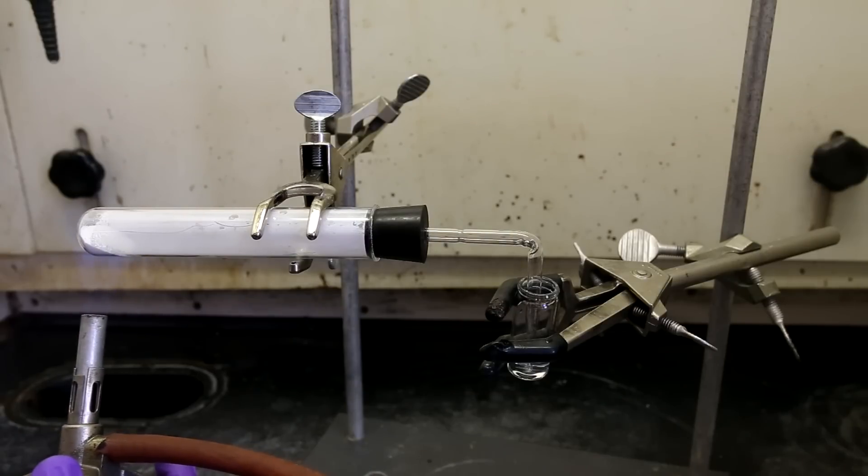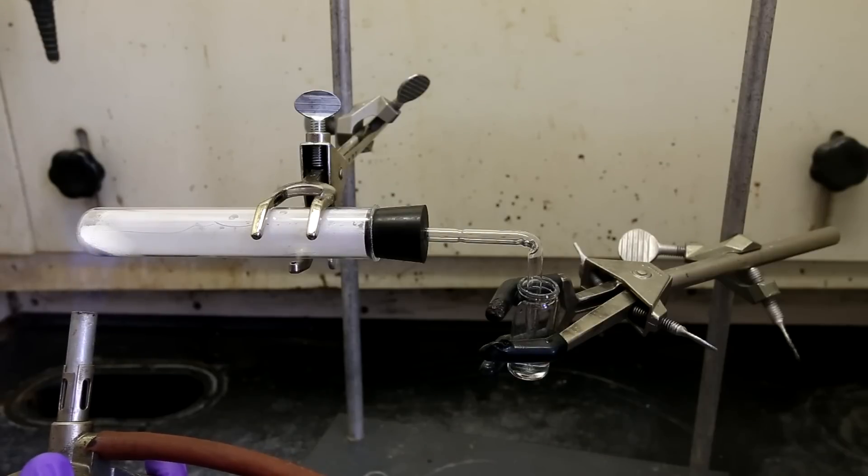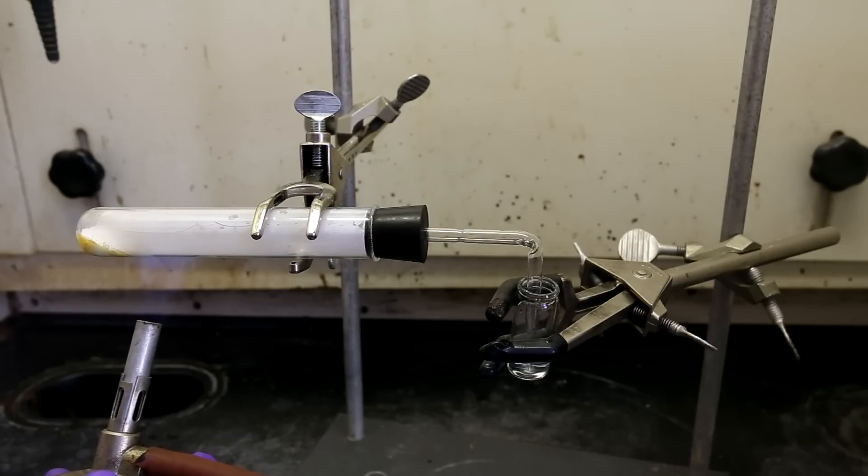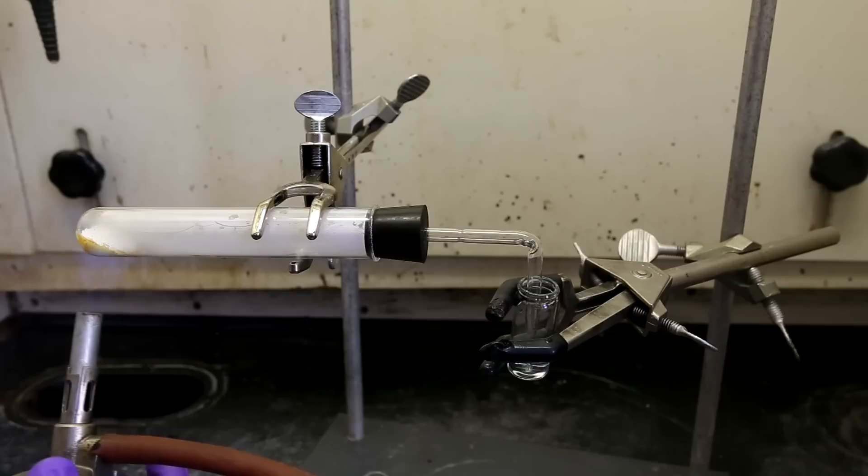Out of the stopper is actually a Pasteur pipette tube that I bent to a 90-degree angle using a Bunsen burner. This leads into a small dram vial containing some water. The idea here is that the lysine can be heated to high temperatures to decarboxylate as much of it as possible.